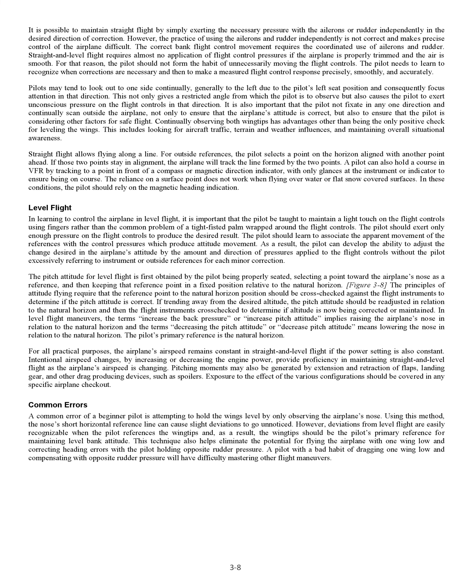The pitch attitude for level flight is first obtained by the pilot being properly seated, selecting a point toward the airplane's nose as a reference, and then keeping that reference point in a fixed position relative to the natural horizon. The principles of attitude flying require that the reference point to the natural horizon position should be cross-checked against the flight instruments to determine if the pitch attitude is correct. If trending away from the desired altitude, the pitch attitude should be readjusted in relation to the natural horizon and then the flight instruments cross-checked to determine if altitude is now being corrected or maintained. In level flight maneuvers, increasing back pressure or increasing pitch attitude implies raising the airplane's nose in relation to the natural horizon.